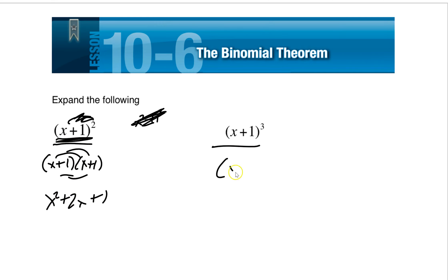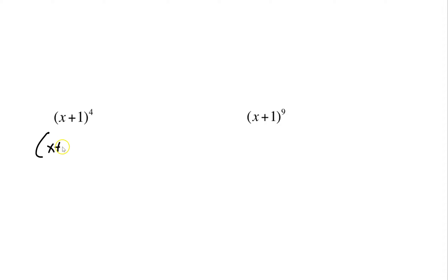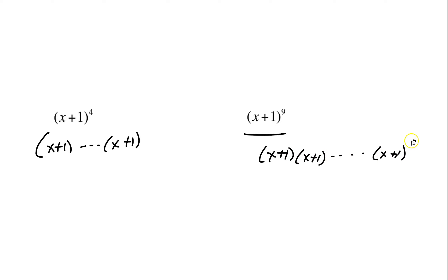Same thing with (x+1)³ — it's (x+1)(x+1)(x+1). We know that's x²+2x+1 times (x+1), and you distribute from there. Notice it's not going to be x³+1³, it doesn't work that way. The theorem is an easy way to do this, because once you get to (x+1)⁴ or (x+1)⁹, doing it by hand takes forever.